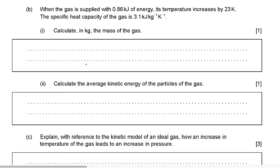When the gas is supplied with 0.86 kJ of energy, the temperature increases by 23 kelvin. The specific heat capacity of the gas is 3.1 kJ per kilogram per kelvin. Calculate, in kilograms, the mass of the gas. So here we know the energy, we know the temperature change, and we also know the specific heat capacity, and we need to find the mass.